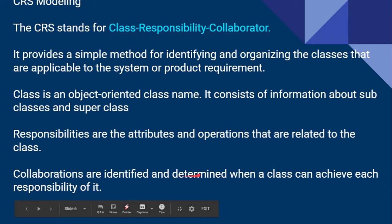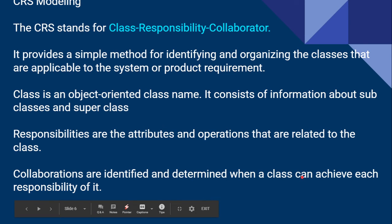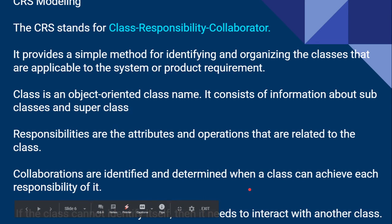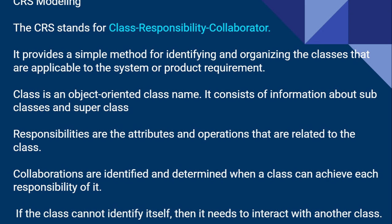Collaborations are identified by determining when a class can achieve each of its responsibilities. The object does some operation and achieves something — a goal — which is the responsibility the class has fulfilled. When the class achieves the responsibility it is meant for, we can say the collaborations are identified, meaning the work is done and communication took place between the classes. If you are not able to identify a class separately, we can find out the interaction of one class with the other class that needs interaction.